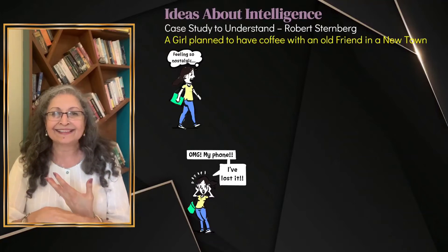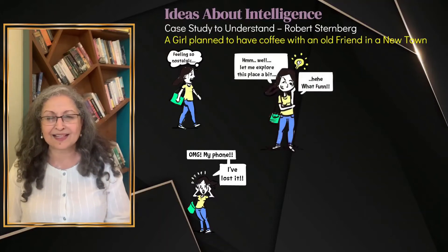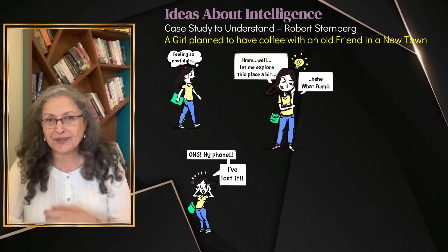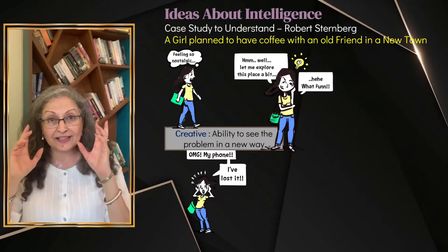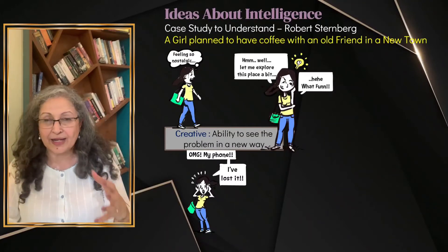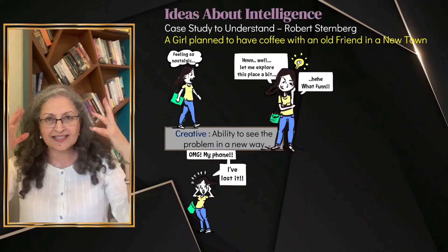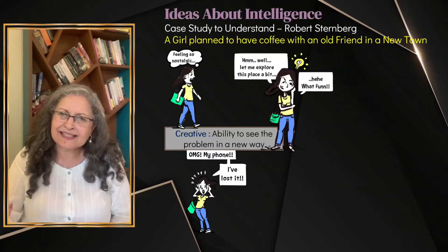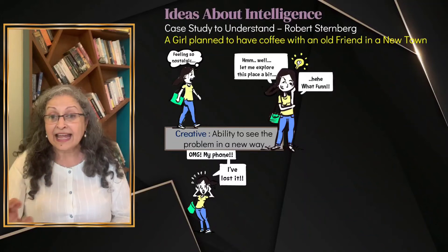Her intelligence kicks in. She says, 'Let me just explore this town — it doesn't matter, I'll explore it and think.' I'm wondering what you are thinking — what kind of intelligence was she utilizing right now? It was creative ability: to see a problem in a different way, not to freeze with the problem, not to let the amygdala get hijacked. She says, 'Let me see whether I can think about something else,' and moves forward.